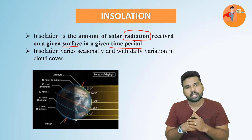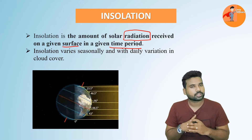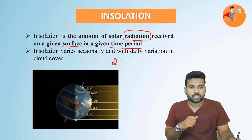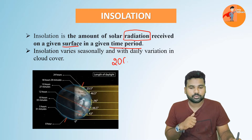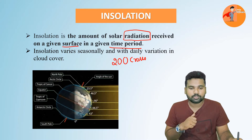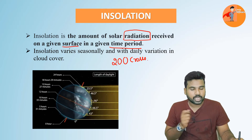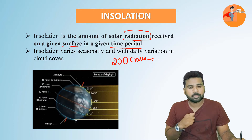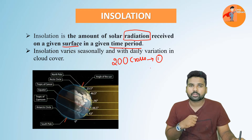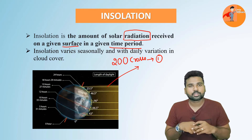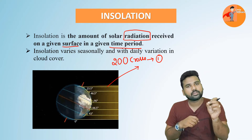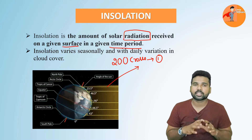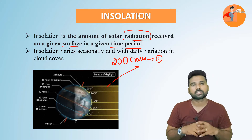The solar radiation coming from the sun is received by the earth in almost 2 billion parts — meaning if 2 billion parts of energy are coming from the sun, only one part of it will be trapped by the earth. That is the amount of energy received by the earth, and it is enough to drive all life forms on this planet.